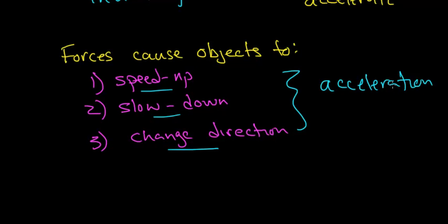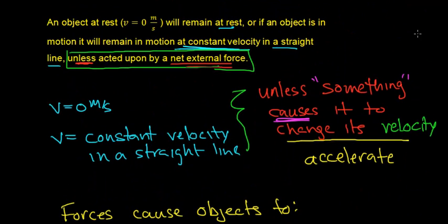So forces cause objects to speed up, slow down, or change direction. That's what Newton's first law of motion is actually saying — it tells us what forces do to objects. Now, you don't actually see the word acceleration in Newton's first law; it's implied from what an object's natural state of motion is: at rest, or moving at constant velocity. And one other thing to point out is that an initial velocity of zero is just a special case of an object moving at constant velocity in a straight line.